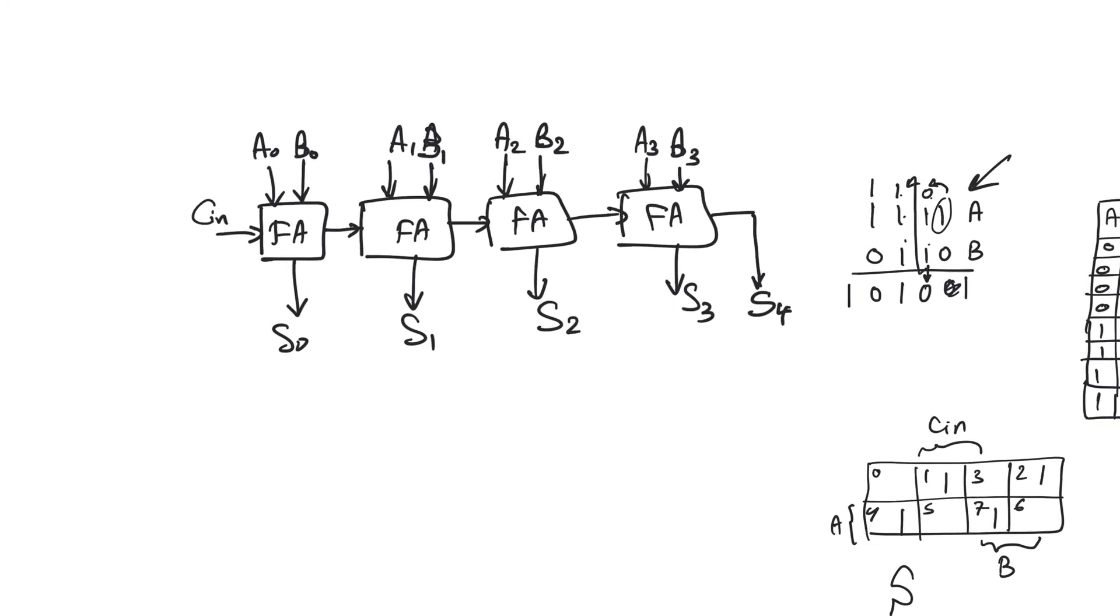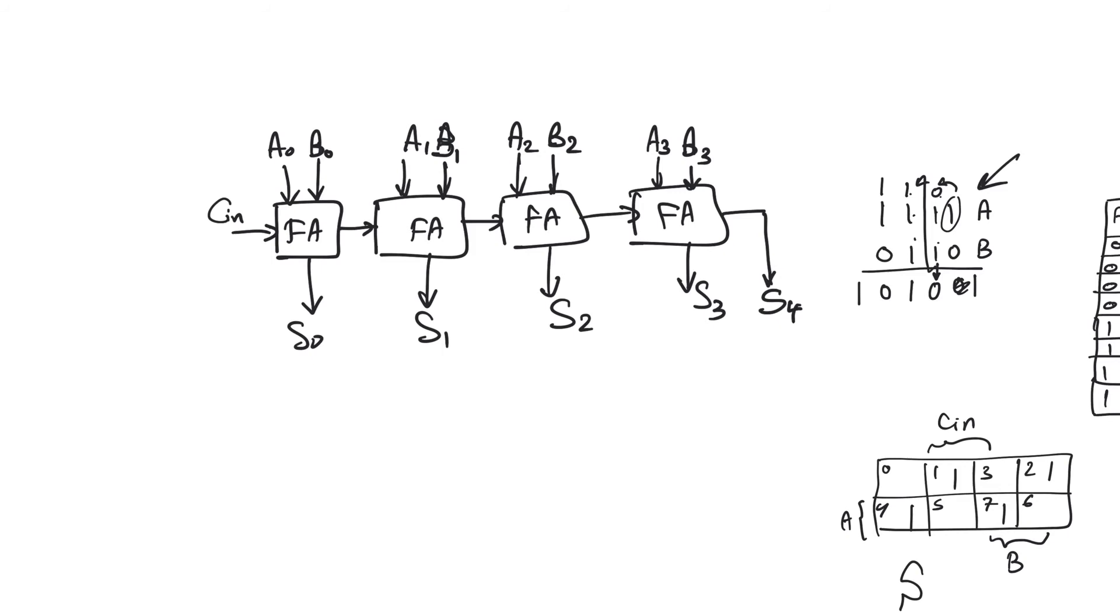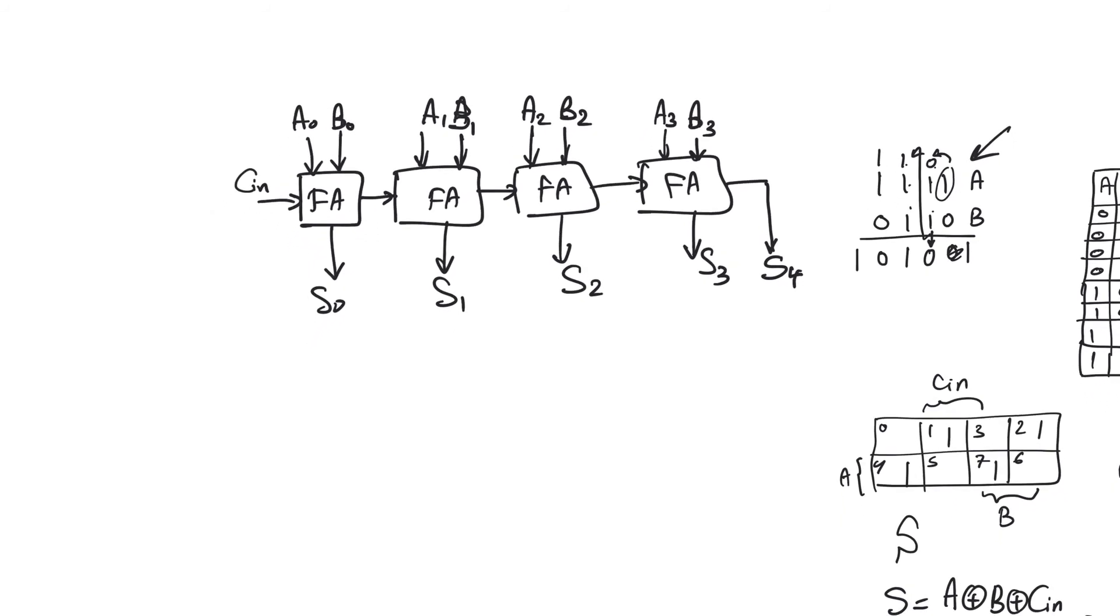So now there are two questions here. First, what is the operating frequency of this adder? When we ask about the operating frequency of any circuit whatsoever, what we do is we assume there are registers at all the inputs and all the outputs. Because we will be using a lot of registers here, we will use an X to mark a register. So we are assuming registers at all the inputs, including CN, and registers on all the outputs, including S4.